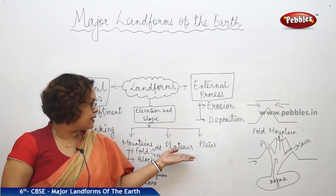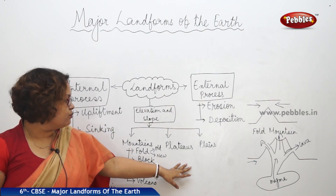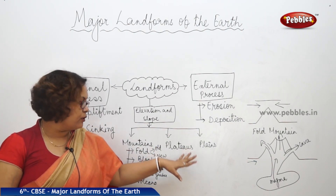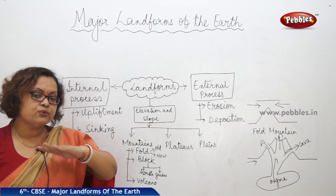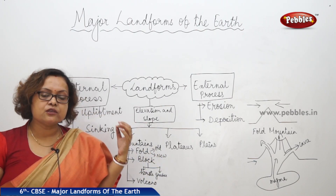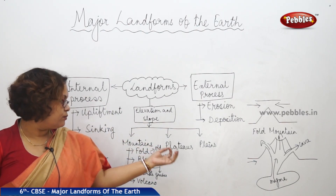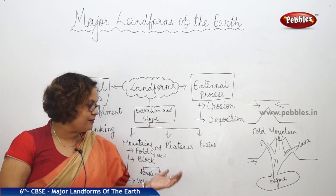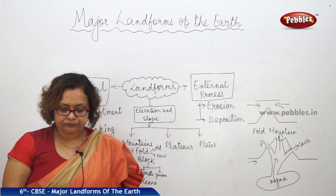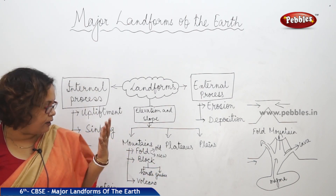Plateaus have an average height of 4,000 to 6,000 meters from mean sea level. The Deccan Plateau is one of the oldest plateaus in India. It is a flat land surface that is very much enriched with minerals. We can find a high proportion of human settlement there. The black soil of the plateau is good for agricultural purposes as well.